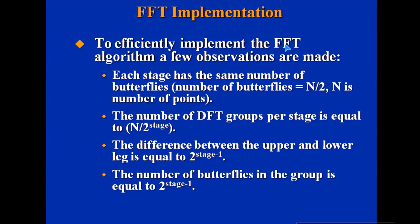To efficiently implement the FFT algorithm, a few observations are made: Each stage has the same number of butterflies (number of butterflies = N/2, where N is the number of points). The number of DFT groups per stage equals N/2^(stage). The difference between the upper and lower leg equals 2^(stage-1). The number of butterflies in the group equals 2^(stage-1).